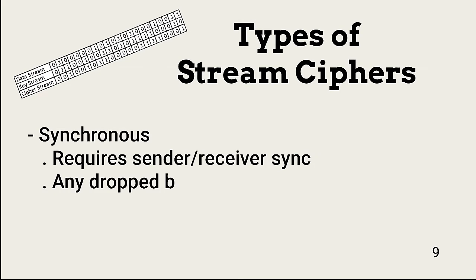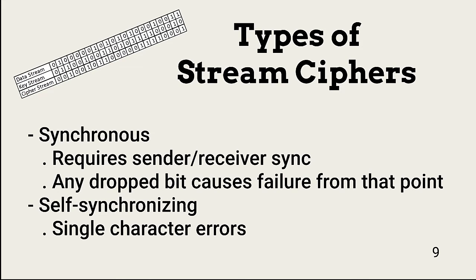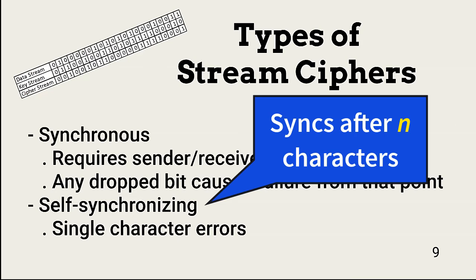There are two types of stream ciphers: synchronous and self-synchronizing. Synchronous ciphers require perfect synchronization between sender and receiver. If a character in the stream is added, dropped, or changed, decryption will fail from the point at which the change was made. Self-synchronizing ciphers enable automatic resynchronization if a character changes, and resync is possible after the receiver receives a certain number of characters.